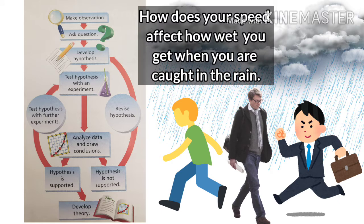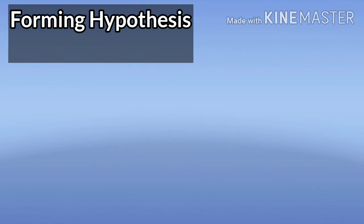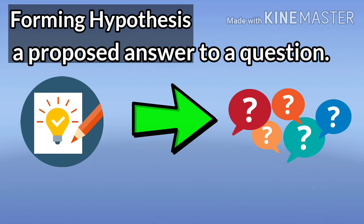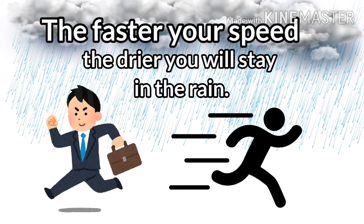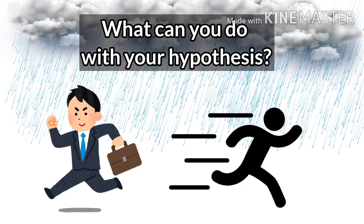The next step is forming a hypothesis. A hypothesis is a proposed answer to a question. To answer the question raised by your observations about traveling in the rain, you might guess that the faster your speed, the drier you will stay in the rain. For a hypothesis to be useful, it must be testable.